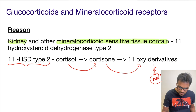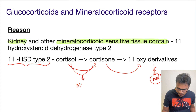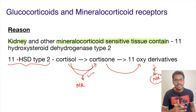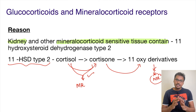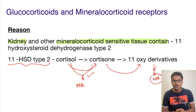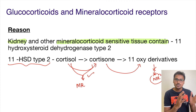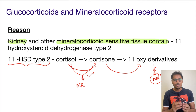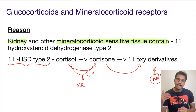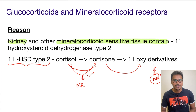Normally, cortisol can act on mineralocorticoid receptors, but it is converted into its derivatives so that it does not produce mineralocorticoid effects. If this enzyme is absent, the large availability of glucocorticoids in the blood would cause these tissues to exert excessive mineralocorticoid action, which can be severely deleterious to the patient.